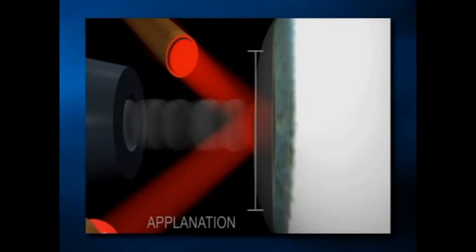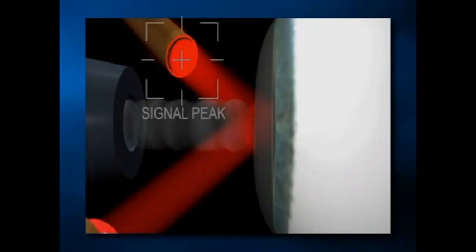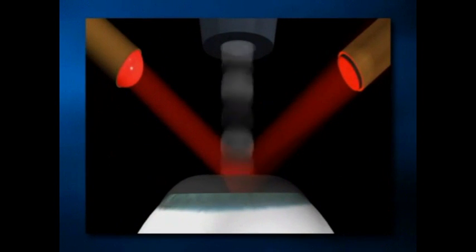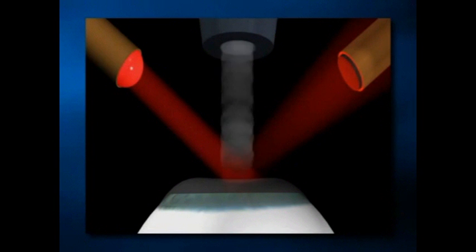When applanation is achieved, the reflected light is nearly collimated and the detector registers a signal peak, causing the pressure transducer to record the applanation pressure. Following applanation, the air pulse continues to impinge upon the cornea, causing it to deflect into a state of slight concavity. The reflected infrared light once again becomes dispersed and the detector signal amplitude decreases.